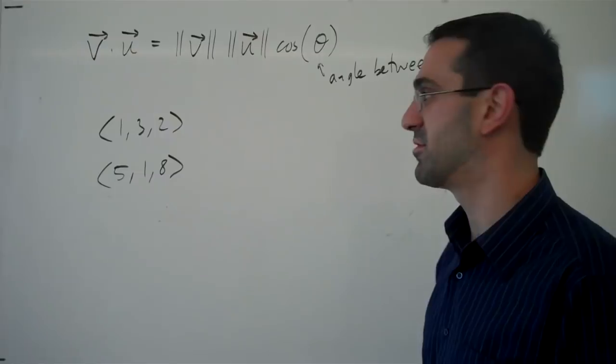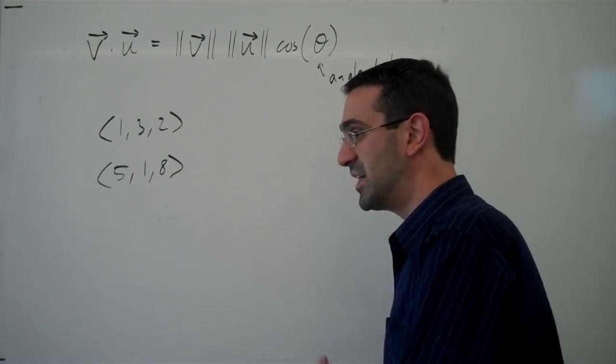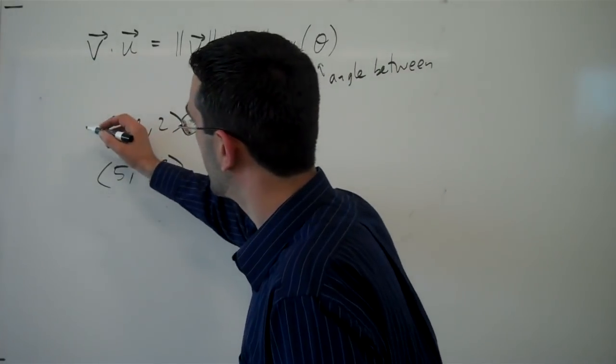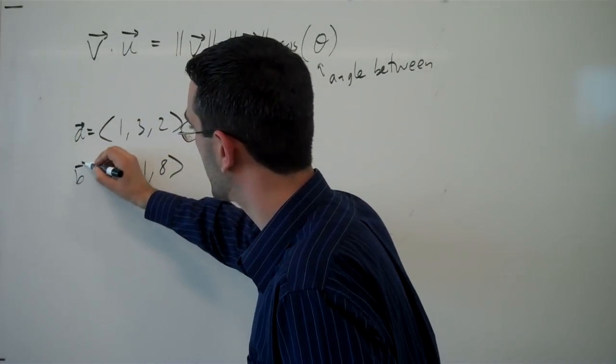But using the dot product we can find it. First thing we need to do is find the dot product using the component form. If I call these vectors a and b,